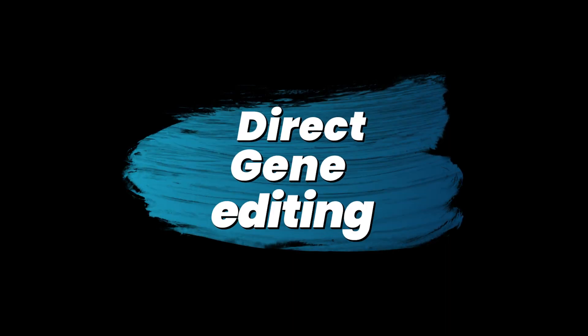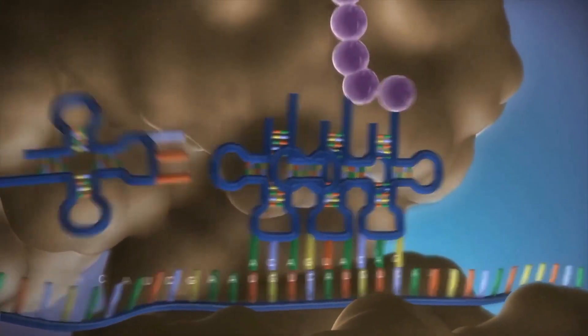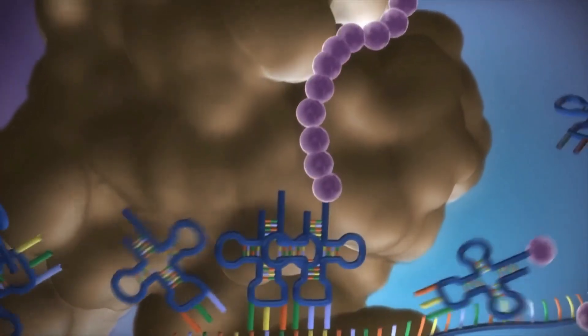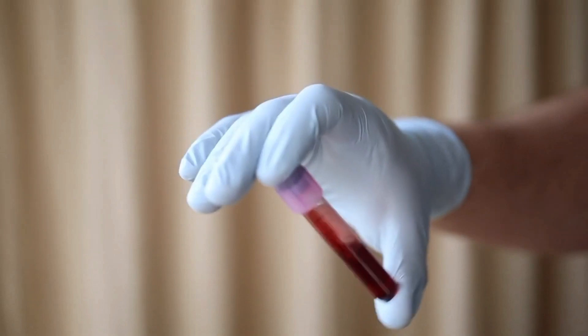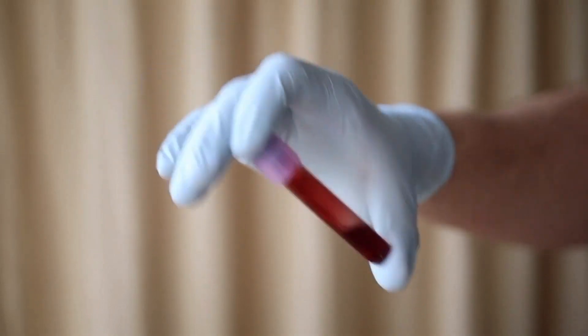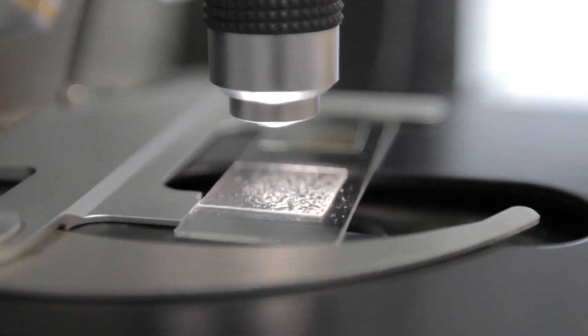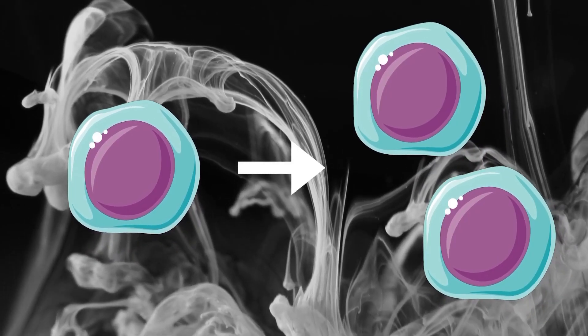Direct gene editing is performed by directly changing or modifying the genetic material of an organism. It involves changing the DNA by adding, removing, and altering particular genes on the DNA strands. The well-known CRISPR has been the buzz of scientific societies because it is faster, cheaper, and more efficient than other genome editing methods.